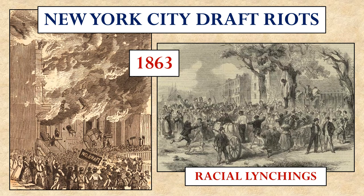Opposition to the draft became so intense that there was a giant draft riot in New York City. People went to the streets protesting — they ended up breaking things and setting things on fire. 120 people died in the riots. But there was also a racial element that raised its ugly head. Many of the people blamed blacks for the situation, saying that if they hadn't been agitating for freedom, they wouldn't be in this mess. And actually, 11 black New Yorkers were lynched by the mobs as retaliation.